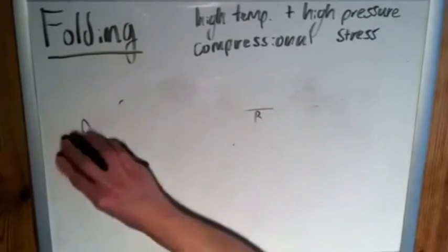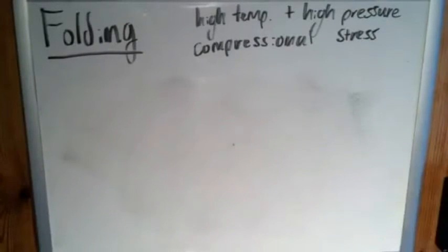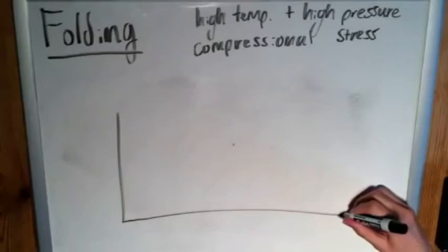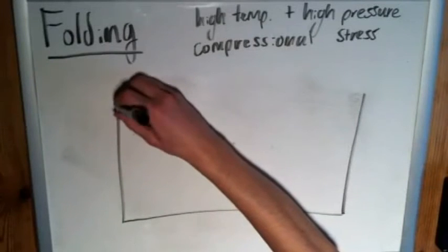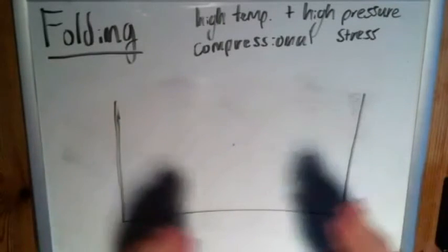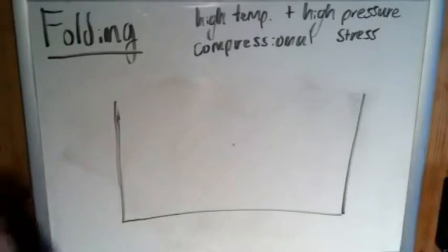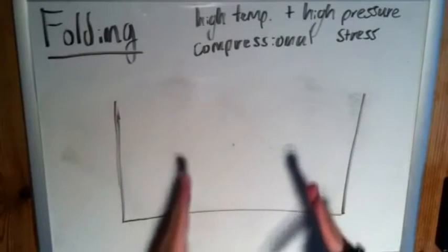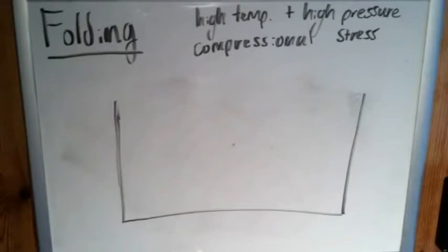But just to show you, oftentimes anticlines and synclines—there I go again, I need to keep track of how many times I mess up—antiforms and sinforms can be seen within the same strata. Because if you think about it, oftentimes, you know, it's like if you have a piece of paper and you're pushing it together, it's not gonna deform such that everything's pointed upwards or pointed downwards. If you crumple it, it's gonna be folded upwards and downwards and it's gonna look almost like a wave to show where the energy's been distributed.